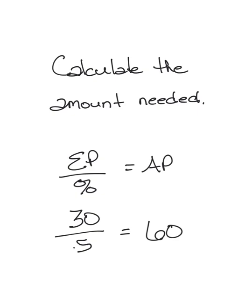The formula for this is EP divided by percentage equals AP. Our EP is 30, our percentage is 0.5. 30 divided by 0.5 equals 60 ounces.